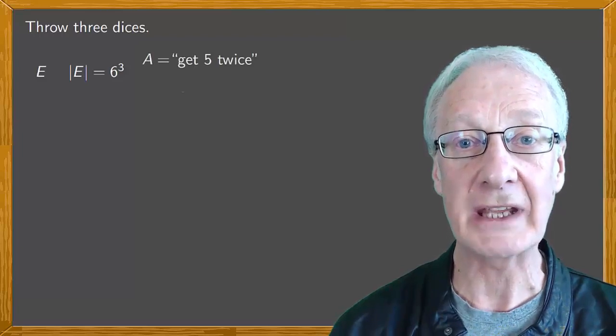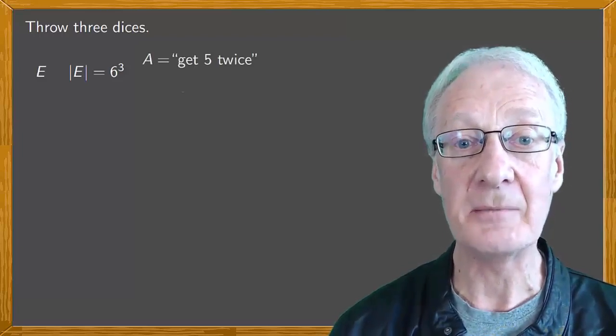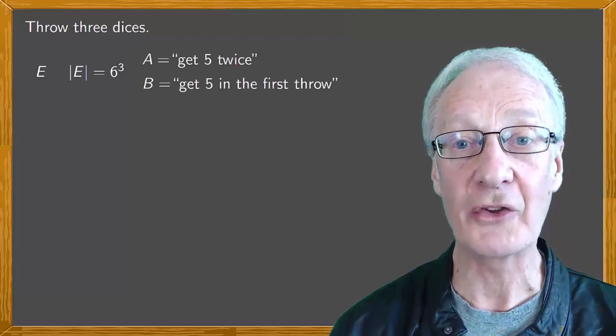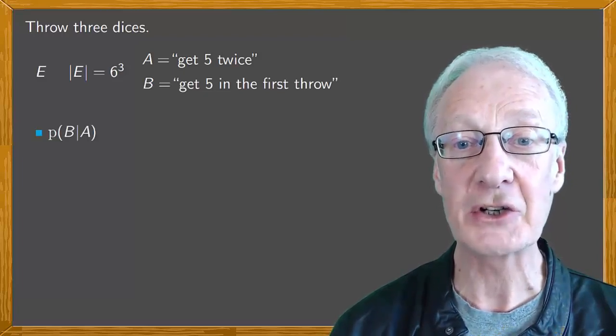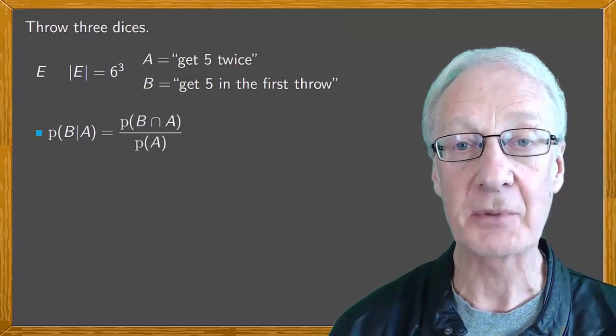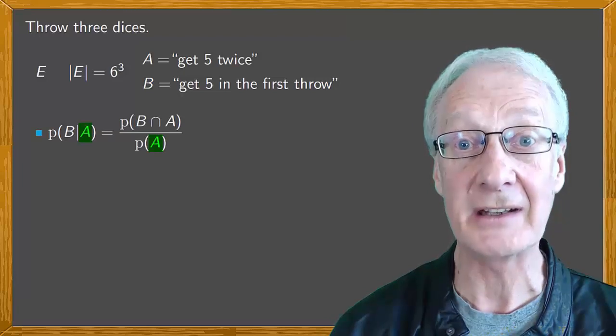Now let's think about a specific combination of events. Event A is that we get five twice and event B is that we get five on the first throw. The probability of B conditional on A is the probability of the intersection divided by the probability of the second event, A.